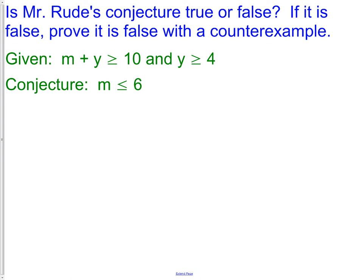Here's a mathematical example. Is Mr. Rood's conjecture true or false? If it is false, prove it is false with a counter-example. So we are given M plus Y is greater than 10. We also know that Y is greater than or equal to 4. Our conjecture here is that M must be less than or equal to 6.